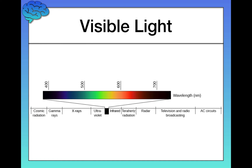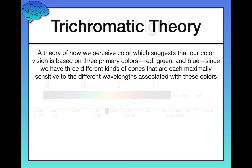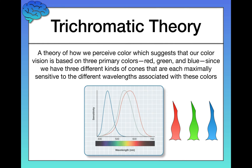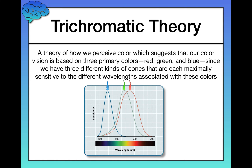So how do we see color? How do we see this in the first place? Well, there are some theories that shed light on this. First, the trichromatic color theory — a theory of how we perceive color. It suggests that our color vision is based on three primary colors: red, green, and blue, since we have three different kinds of cones that are each maximally sensitive to the different wavelengths associated with these colors.